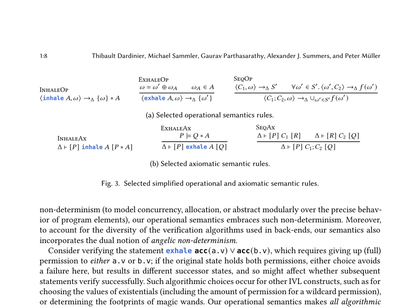The operational semantics of core IVL is defined through a multi-relation approach, capturing both demonic and angelic choices. The set of possible final states after executing a statement is represented by a designated set notation. Simplified operational semantics rules are provided for inhale, exhale, and sequential composition. The inhale rule allows for all possible combinations of states satisfying the given permission, reflecting demonic non-determinism.